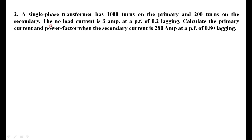Calculate the primary current and power factor when the secondary current is 280 amperes at a power factor of 0.8 lagging. What is given is I0, and the secondary current I2. If we know I0, I2, and the transformation ratio, we can calculate the primary current I1. The primary current consists of two components: the no-load component I0 and the counterbalancing current I1 dash.